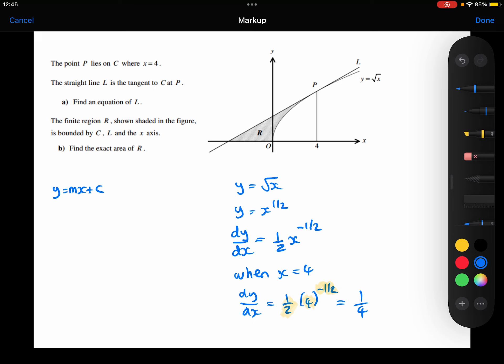So I'm going to say y equals one quarter x plus c. To work out the plus c, I need to know the coordinate of the point P. I know its x coordinate is 4.